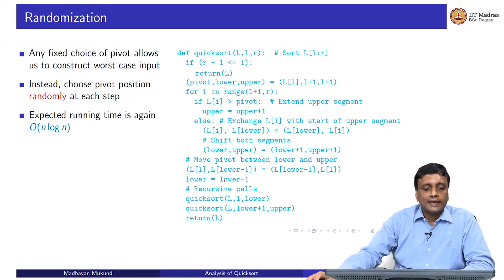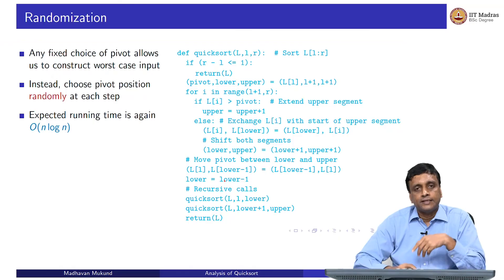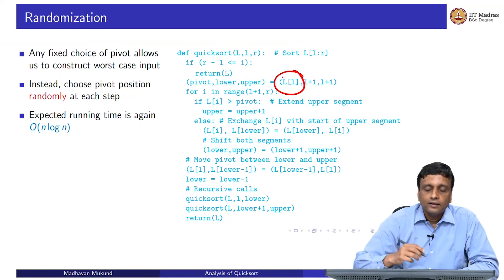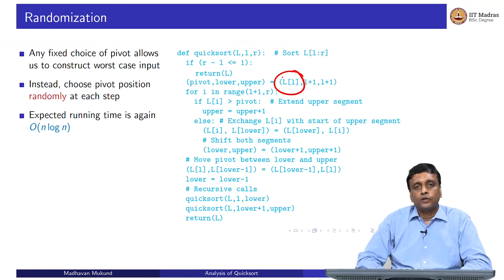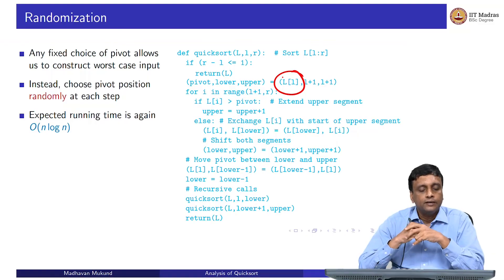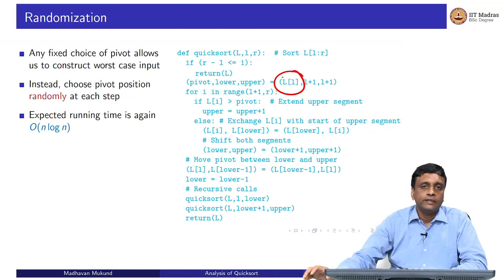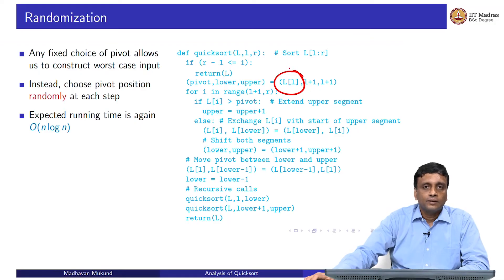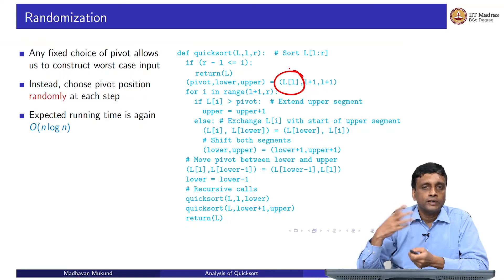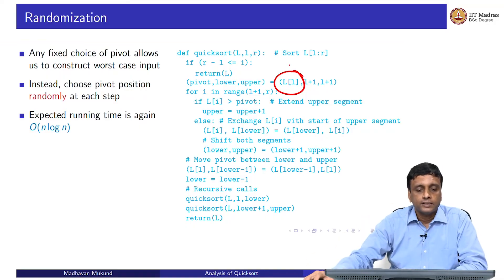If you do the calculation in this randomized sense, where each time you pick the pivot at some random position which you calculate with each iteration, then it turns out you can show that you have an expected running time of n log n. This is a different way of achieving that average case, and it is easier in some sense, because when you actually implement it, if somebody gives you a worst case input, your algorithm is not necessarily going to be stuck in that worst case.